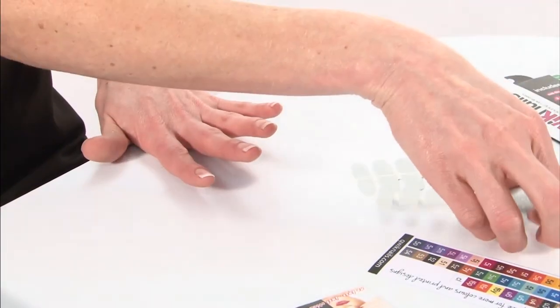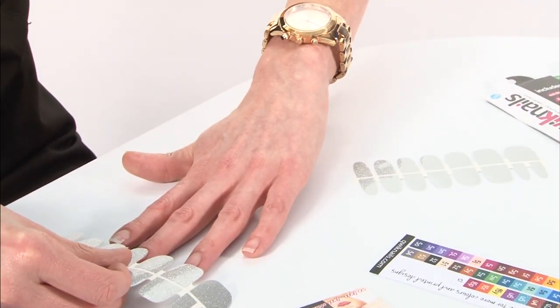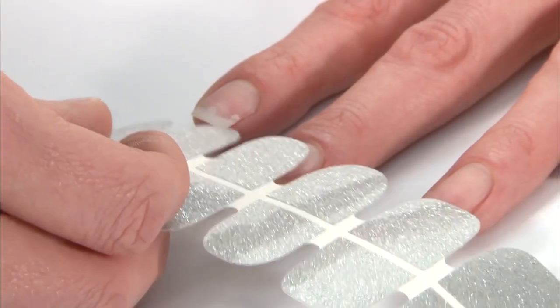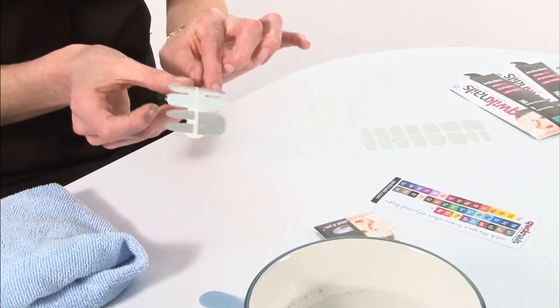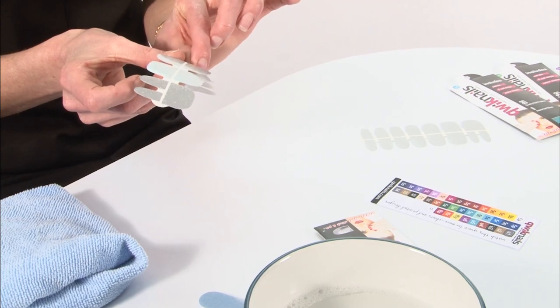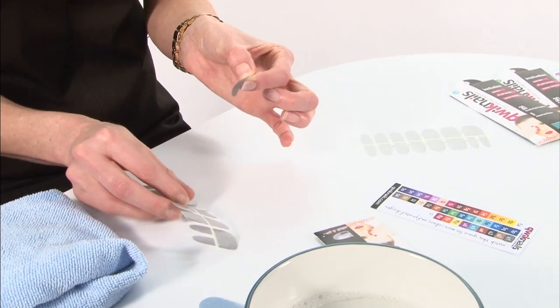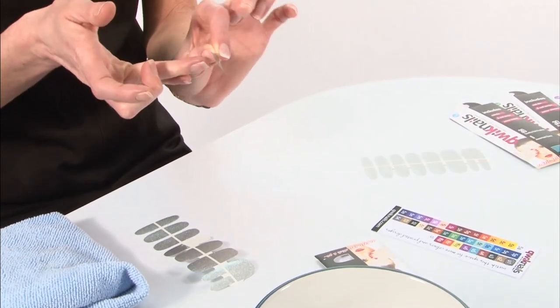Now select the profile that fits your nail. Work your way along to find the profile that fits your nail shape. Once you're happy, gently peel off the wrap, making sure you don't touch the sticky underside.